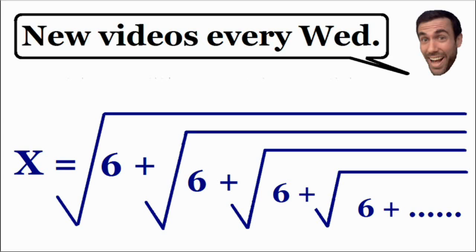The cool thing about nested radicals is that even though there is an infinite number of square roots, some of them actually have an exact value. And this is the case for this example. This nested radical does have an exact value.